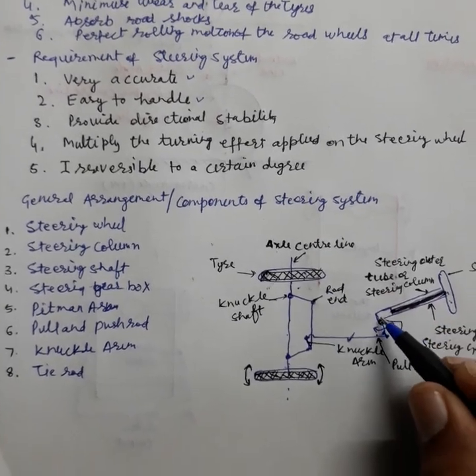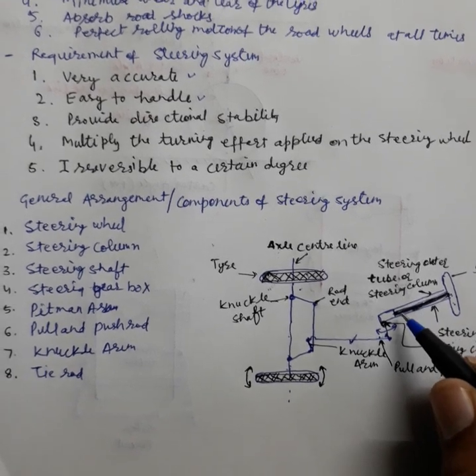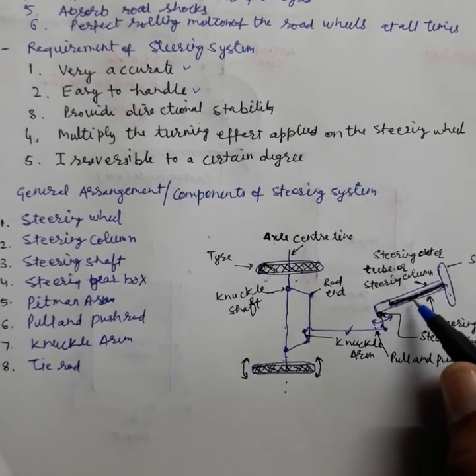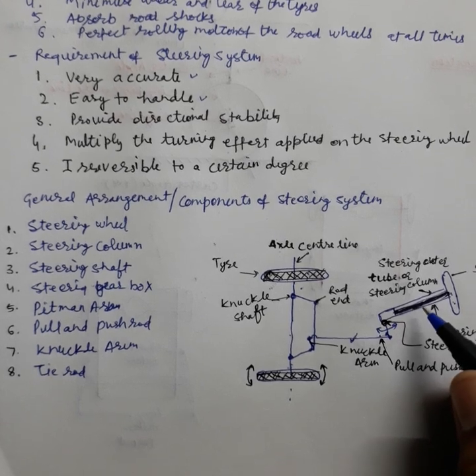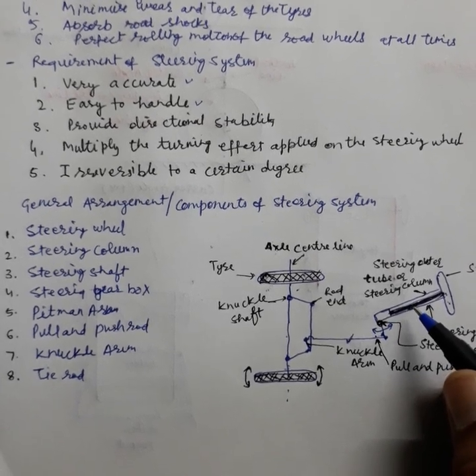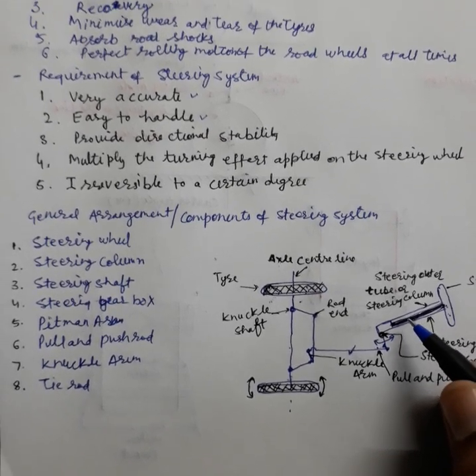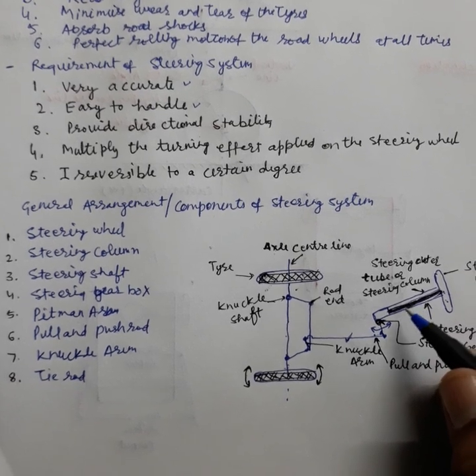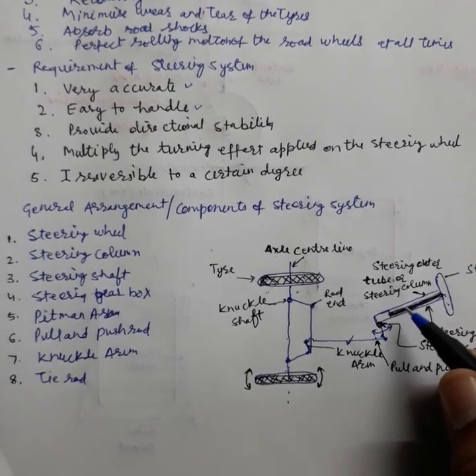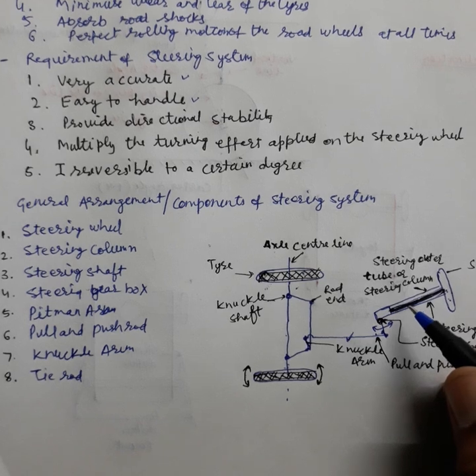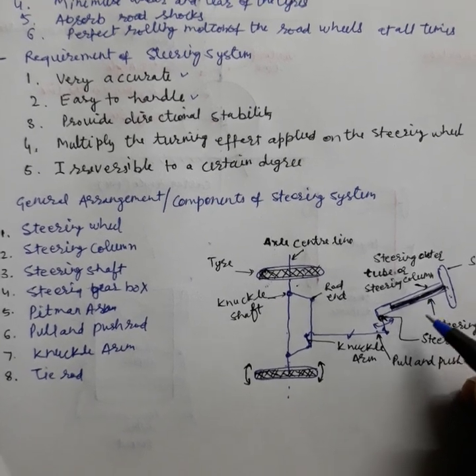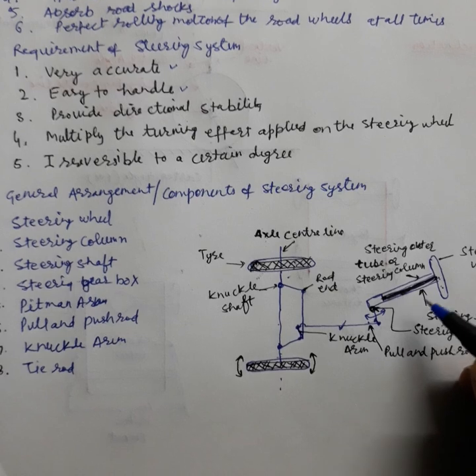This one is the steering column, in which steering shaft is there. From the black color it is highlighted. It is fitted into the steering column with the help of bearing, so that the column is the fixed part and the steering shaft can rotate inside it.